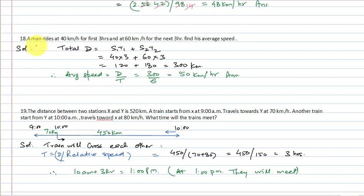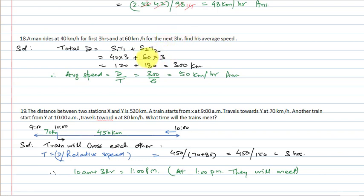Coming to question number 18: A man rides at 40 km per hour for the first 3 hours and 60 km per hour for the next 3 hours. Find his average speed. Total distance: first 3 hours at 40 km/hr = 40 × 3 = 120 km; next 3 hours at 60 km/hr = 60 × 3 = 180 km.